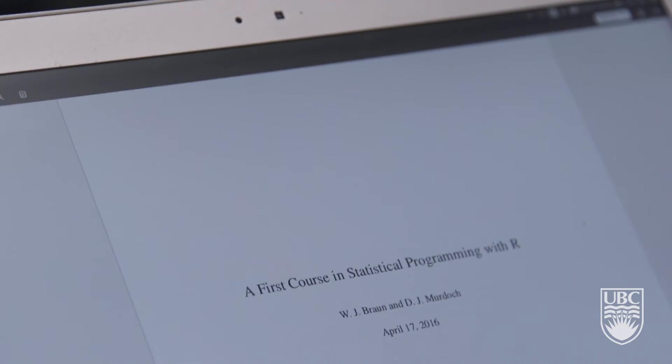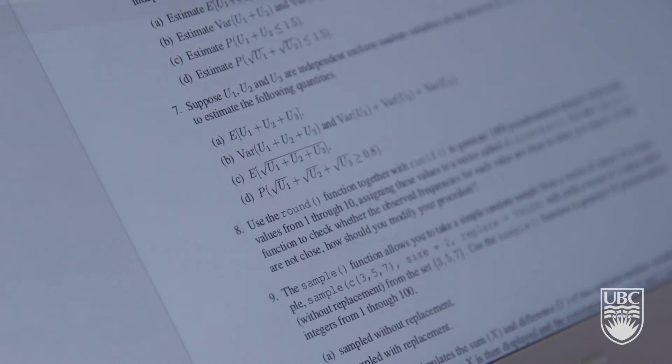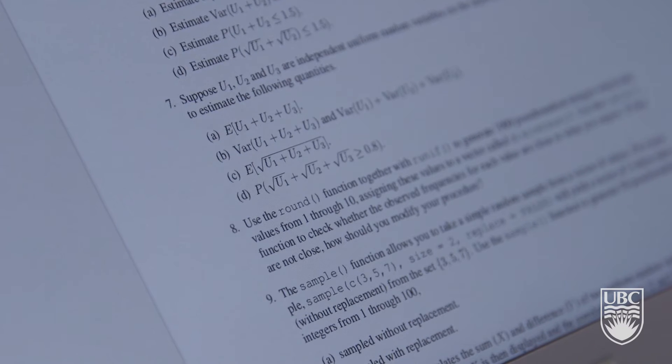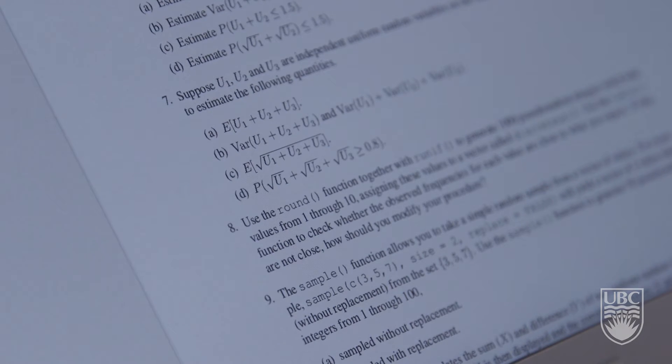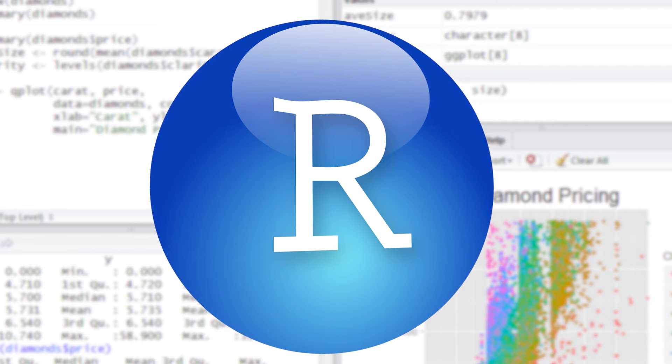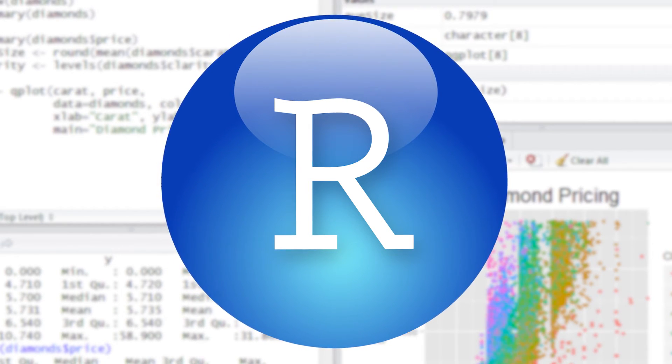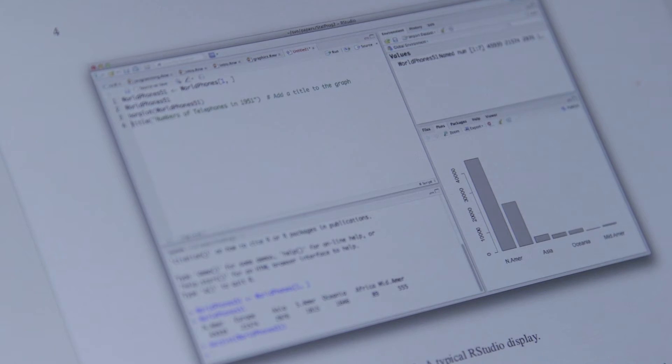In my opinion, R has become popular for two main reasons. The first is that it's open source, which means that it's freely available for anybody to download and use. The second reason is recently R Studio has put together an interface that makes it very easy to use.